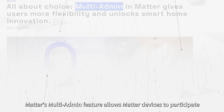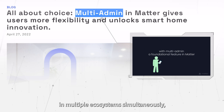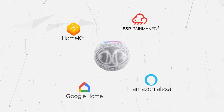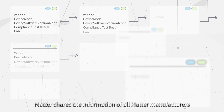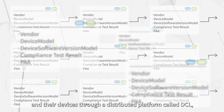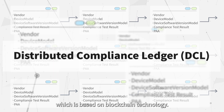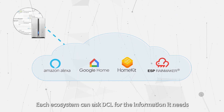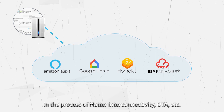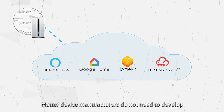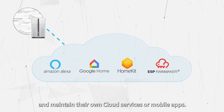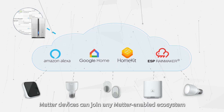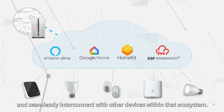Matter's multi-admin function allows Matter devices to participate in multiple ecosystems simultaneously, enabling cross-platform communication. Matter shares information about all Matter manufacturers and their devices through a distributed registry called DCL, which is based on blockchain technology. Each ecosystem can query DCL for the information it needs during Matter interoperability, OTA, and other processes. Matter device manufacturers do not need to develop and maintain their own cloud services or mobile apps, allowing Matter devices to join any Matter-enabled ecosystem and seamlessly interconnect with other devices.